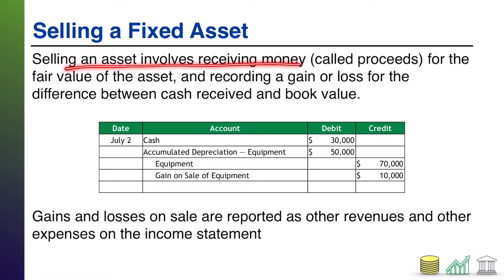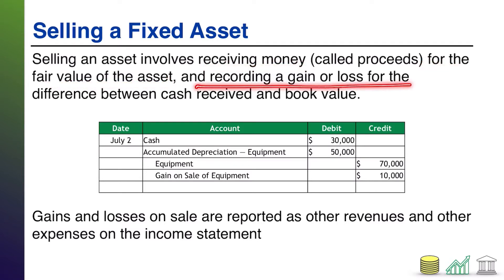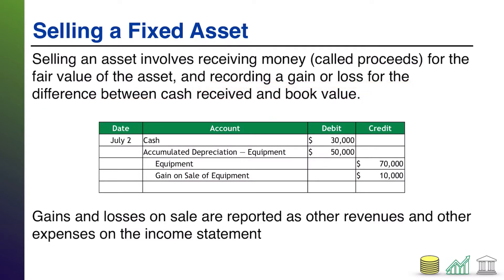Selling an asset involves receiving money. Typically the word for this is 'proceeds.' So anytime you see it says the proceeds from the sale, they're literally referring to essentially the cash that you received. So it involves receiving money for the fair value of the asset because you're selling in an open market, and recording a gain or loss for the difference between the cash received and the book value of that asset.